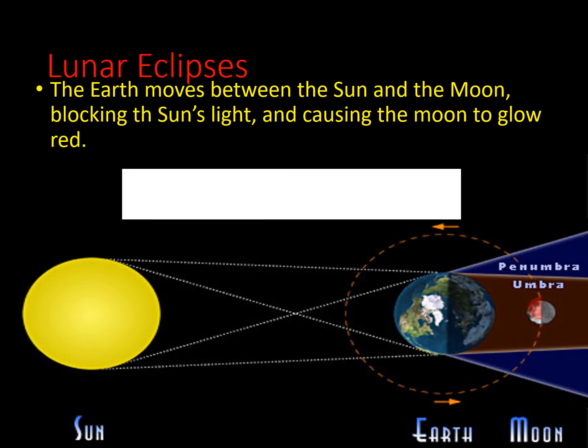During a lunar eclipse, the earth moves between the sun and the moon, blocking the sun's light and causing the moon to glow red. The order is: sun, earth, moon — in a straight line. During a lunar eclipse, the earth is between the two heavenly bodies. The darker shadow is called the umbra and the lighter shadow is called the penumbra.